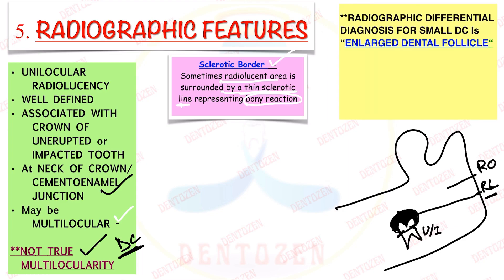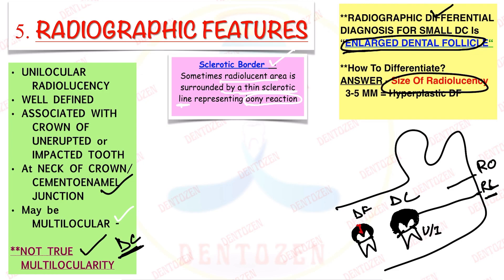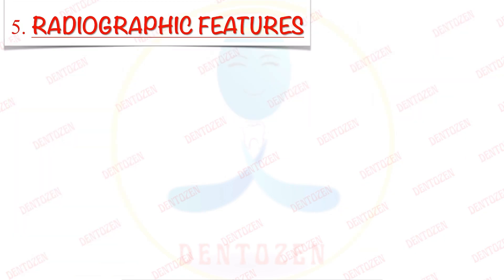A viva question: dentigerous cyst can be confused radiographically with an enlarged dental follicle. The distinguishing criterion is size — if the radiolucency around the crown is more than 5 mm, we consider it a dentigerous cyst.